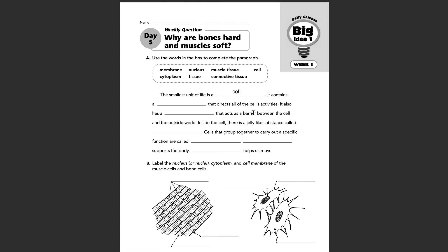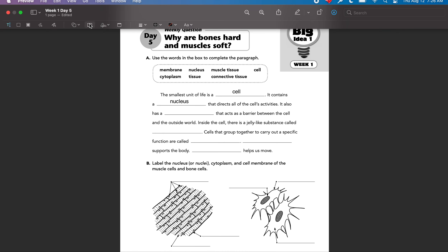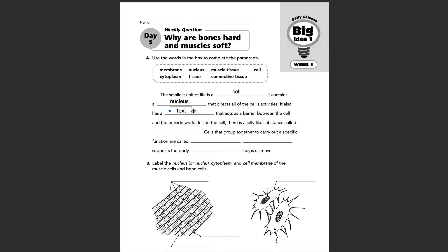It contains a blank that directs all the cell's activities — we know the control center, or command center, of a cell is the nucleus. It also has a blank that acts as a barrier between the cell and the outside world. We know that barrier or shield — that force field — is the cell membrane. Inside the cell, there's a jelly-like substance called blank. We know that jelly-like substance that holds everything in place is called cytoplasm.